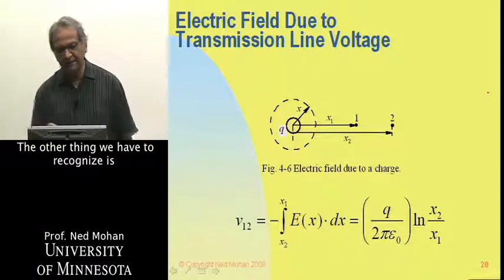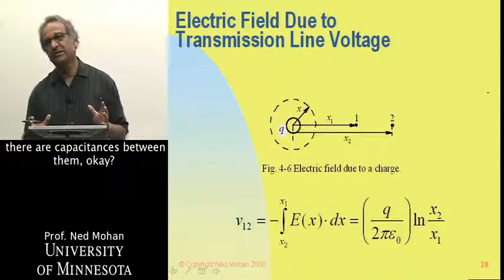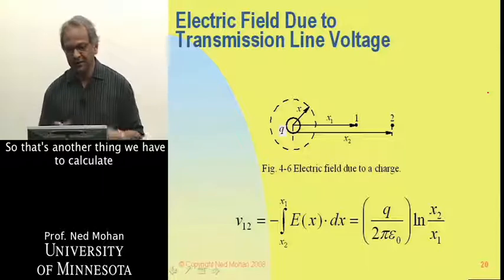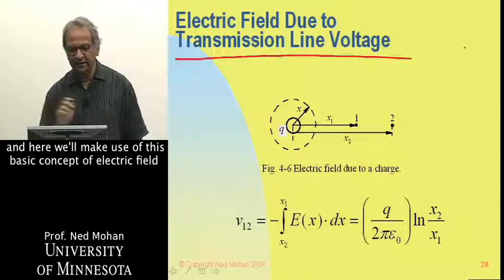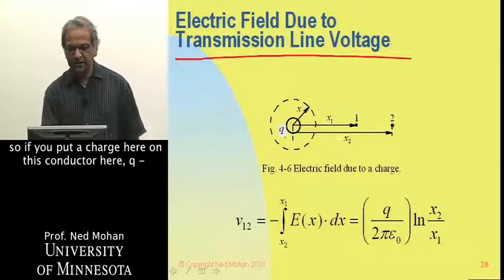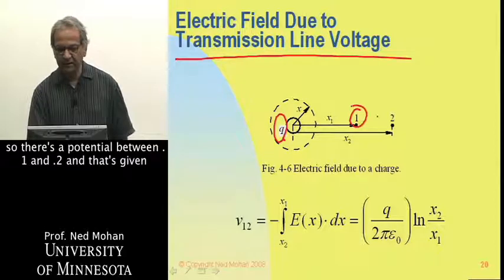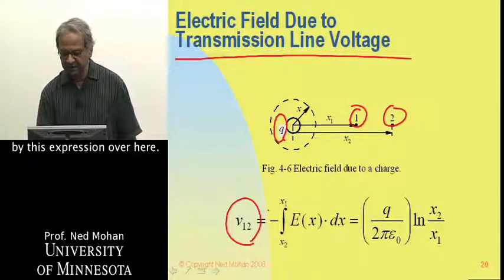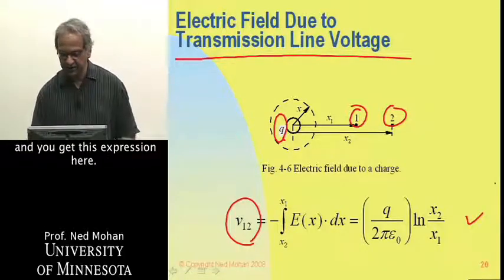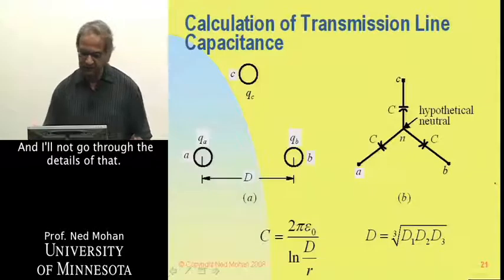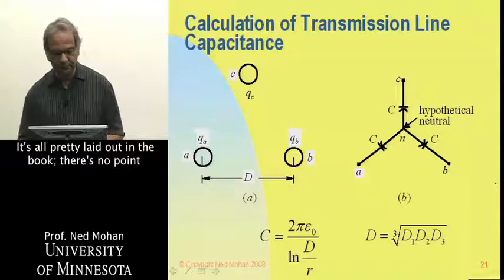The other thing we have to recognize is that when you have these three conductors, there are capacitances between them. So that's another thing we have to calculate. And here we will make use of this basic concept of electric field. So if you put a charge here on this conductor, Q, there's a potential between 0.1 and 0.2, and that's given by this expression over here. There's an electric field, and you can integrate that field, and you get this expression here. I'll not go through the details of that. It's all pretty well laid out in the book. There's no point going over here.